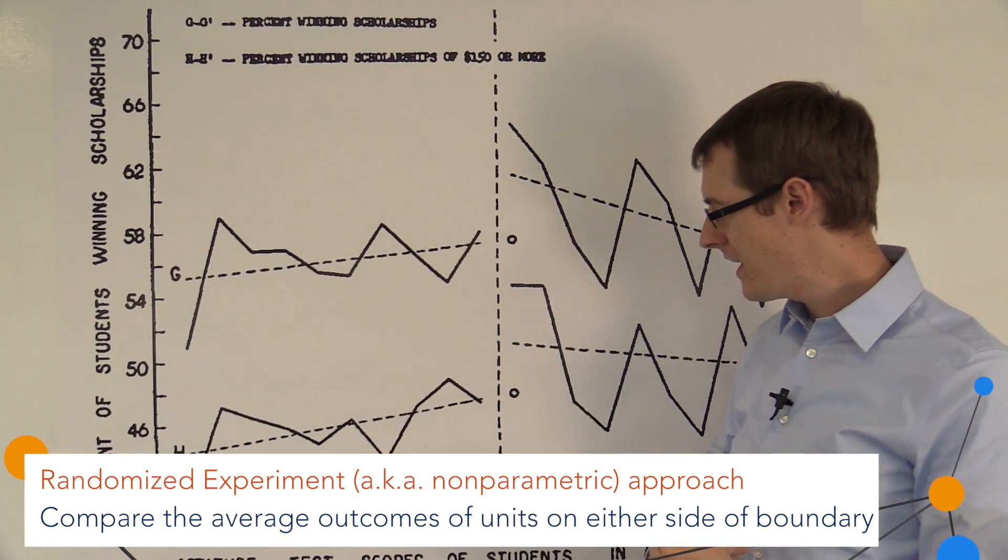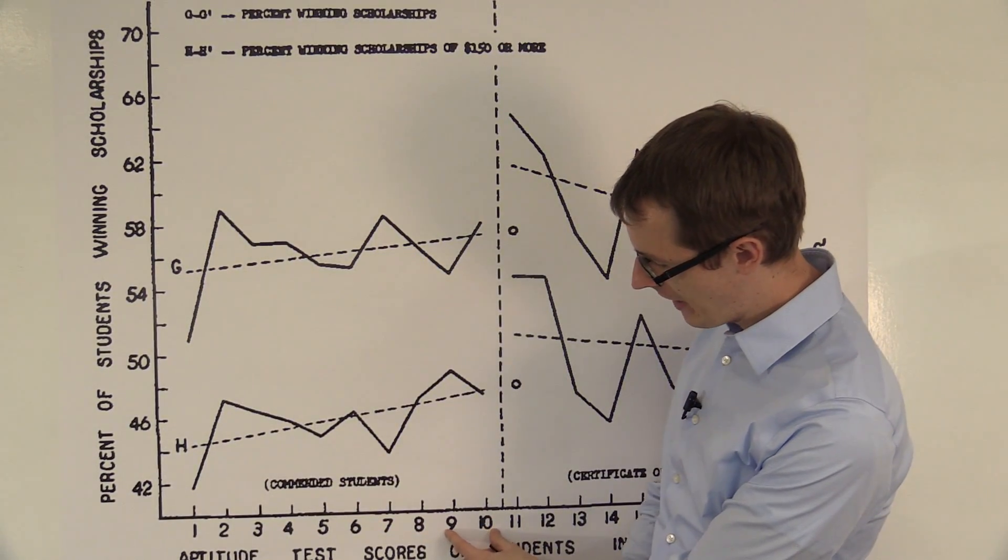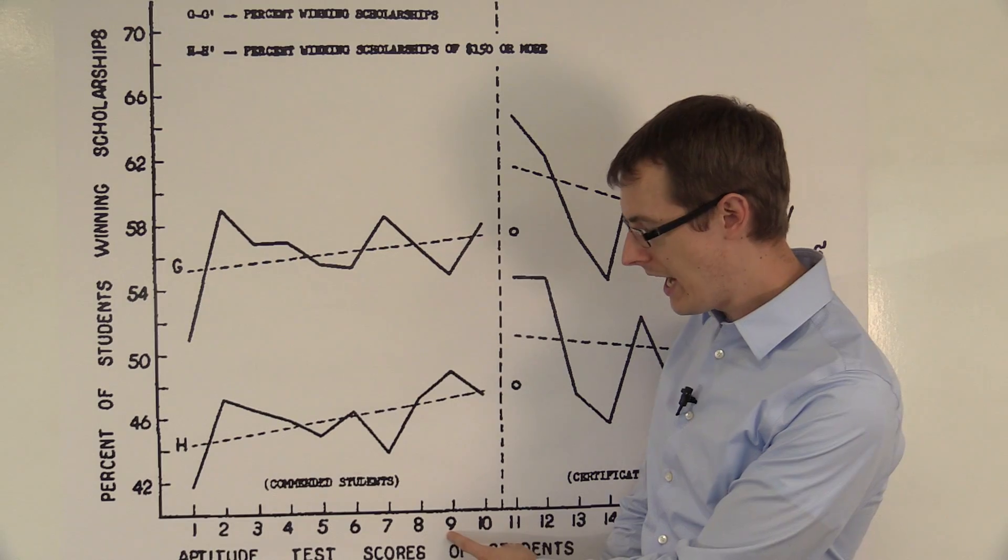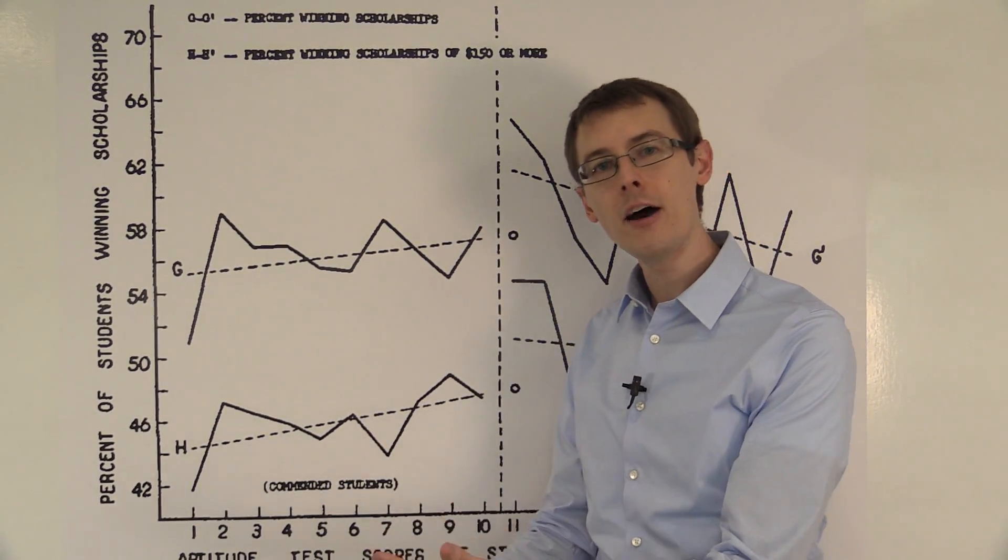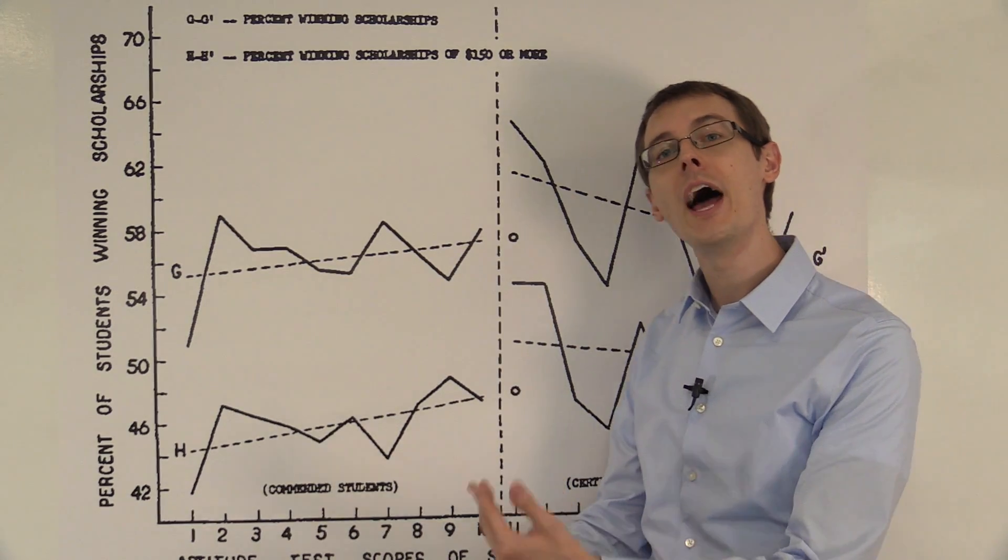Now you might think, why should I only compare 10 and 11? Why don't I compare the students who scored a 9 and a 10—call that my control group—to the students who scored an 11 and a 12, call that my treatment group.